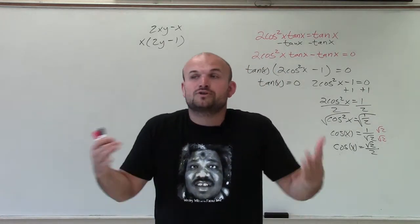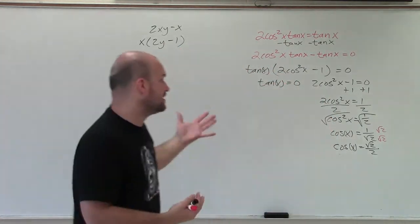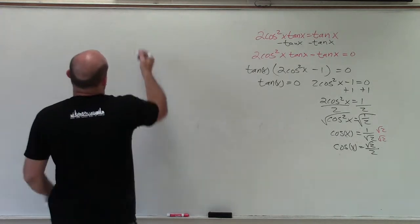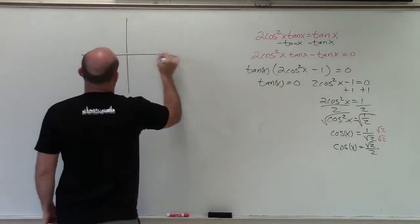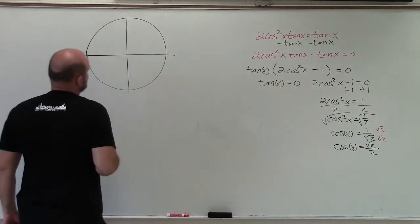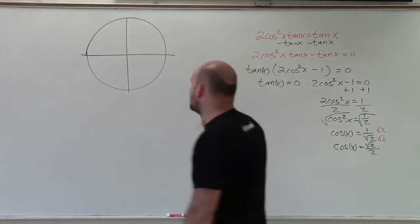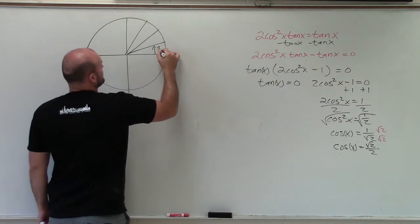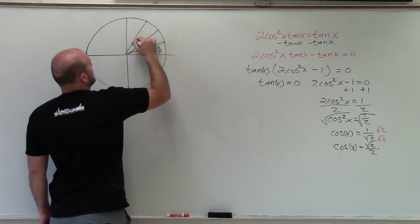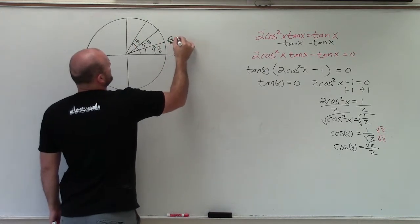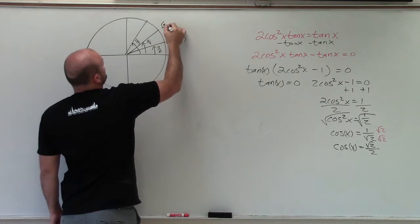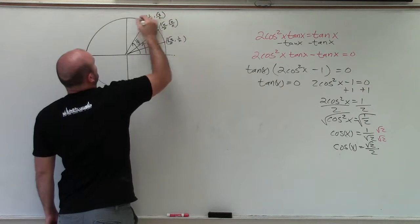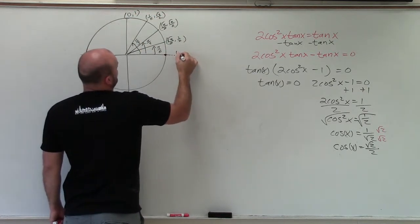We're trying to find all of the solutions that make those equations true. To do that, we need to know our unit circle. Looking at the unit circle, I'll go through the main points: pi over 6, pi over 4, and pi over 3, along with the axis points (0,1) and (1,0).